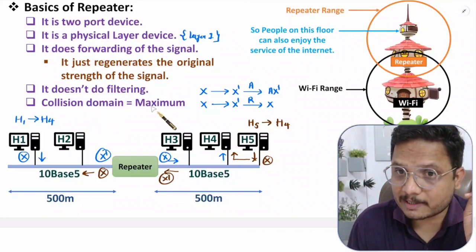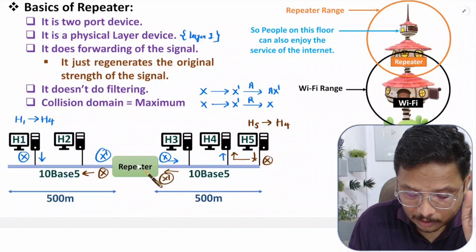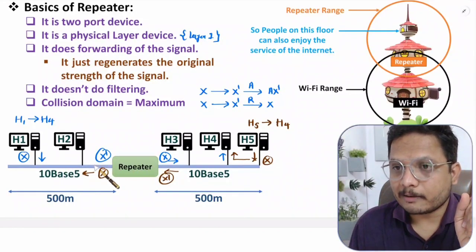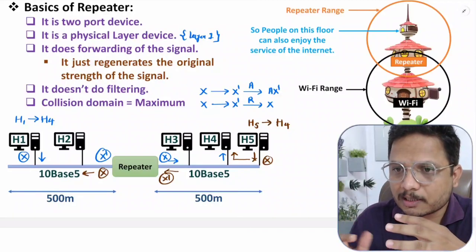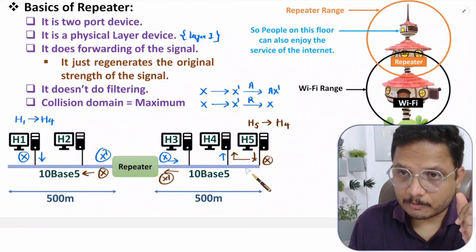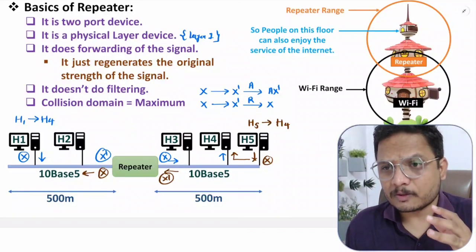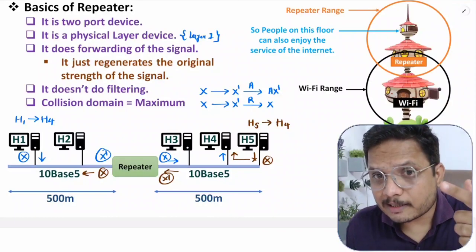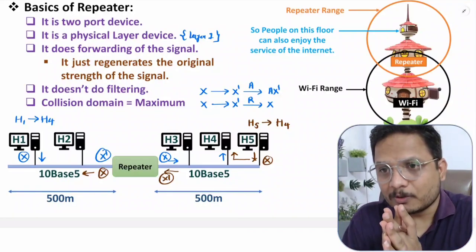The collision domain is maximum with a repeater. The reason is that the repeater does not do filtering, so all signals get repeated and re-forwarded. As you add more nodes using repeaters, there will be more collisions. So the collision domain equals the total number of hosts connected — if N hosts are connected, the collision domain is N. In short, the repeater is a physical layer device (layer 1) that regenerates signals, does not do filtering, and has a maximum collision domain.